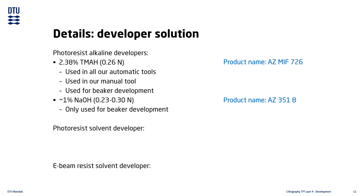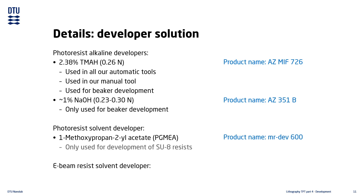The solvent developer for photoresist is PGMEA, which is only used for development of SU-8 resists. The solvent developer for e-beam resists is pentyl acetate, known for its very distinct banana-like smell.